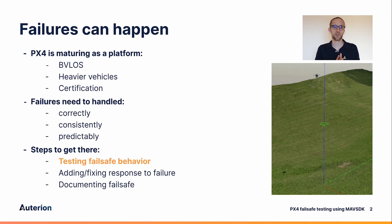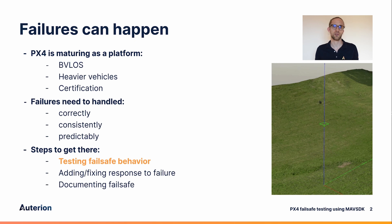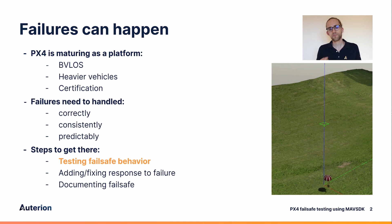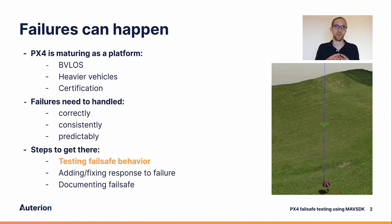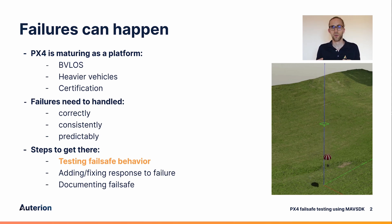Failures can always happen, but as PX4 is maturing as a platform, as we're looking more and more into beyond visual line of sight flights, as some of the vehicles are getting heavier and as we're doing steps towards certification, we absolutely need to make sure that failures are handled correctly, consistently, and also predictably. The first step to get there is to actually be able to test the failsafe behavior. Once we have tests in place, we can add missing failsafe functionality or fix existing ones. Last but not least, we also want to properly document the failsafe so that an operator knows exactly what they have to expect when a failure happens.